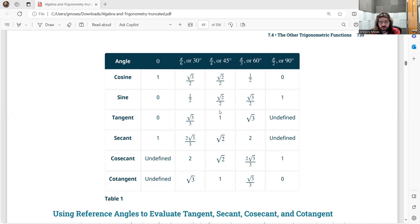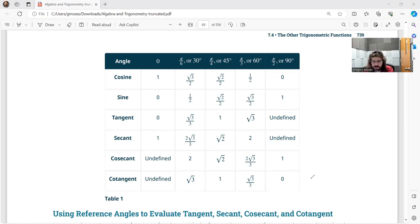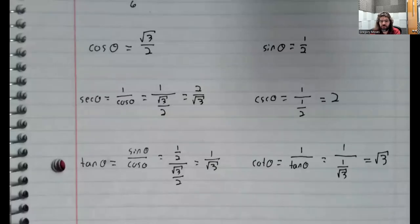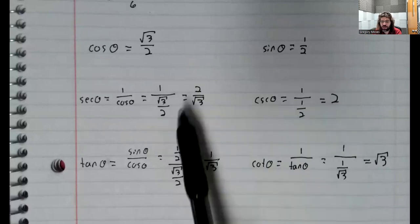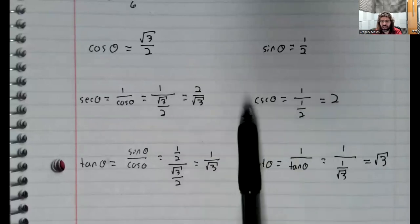Under no circumstances should you try to memorize this table. If you need something other than the cosine or sine, you should... If you need something other than the cosine or the sine, which you're supposed to have committed to memory, you should just calculate whatever trig function you do need, like we did in this example.